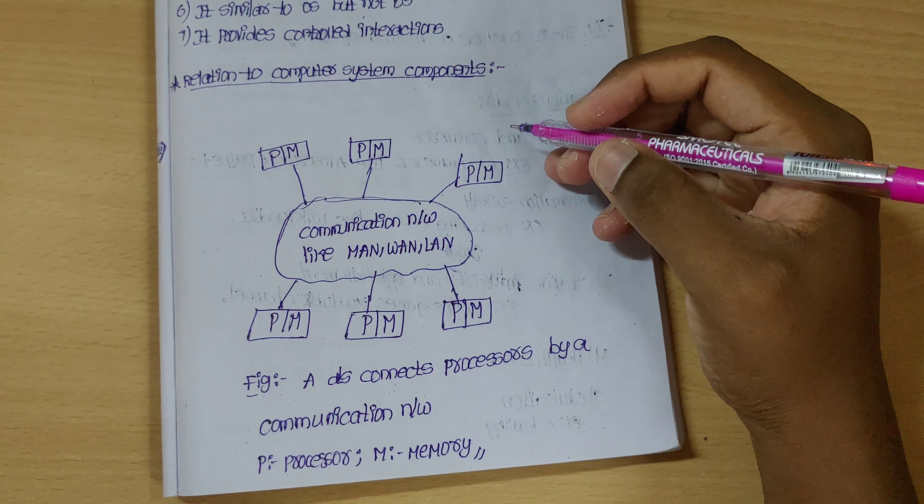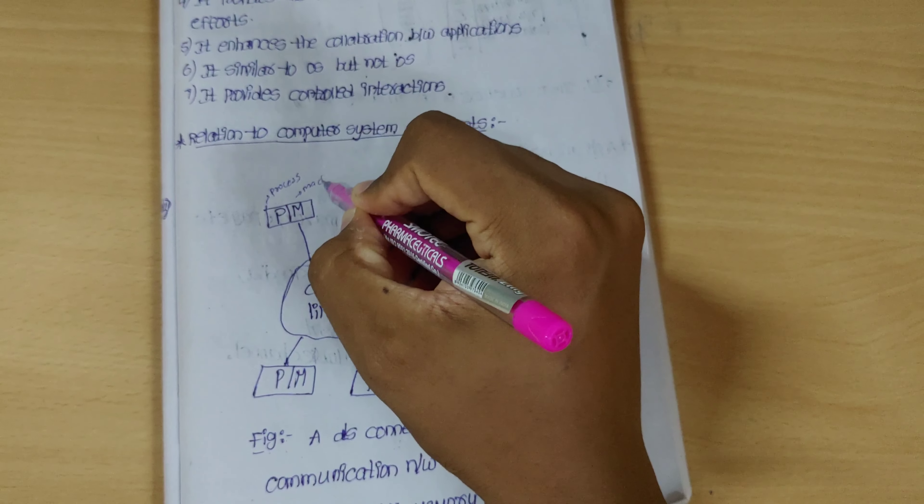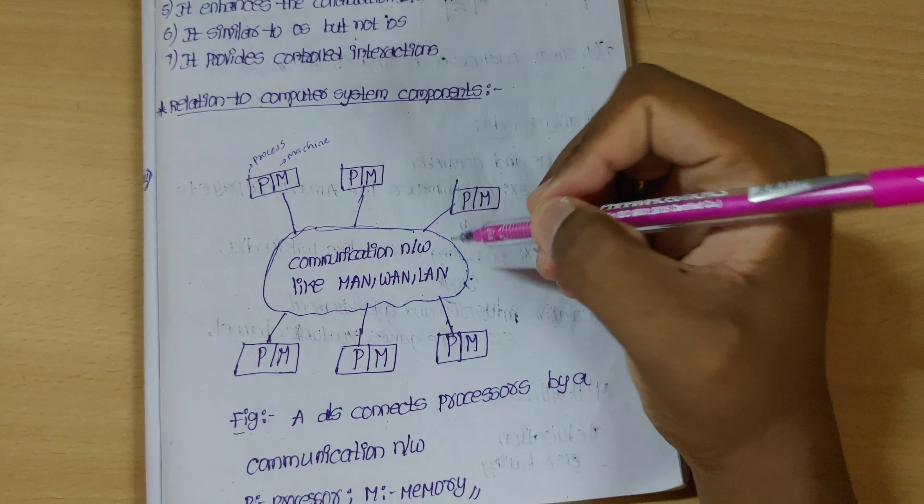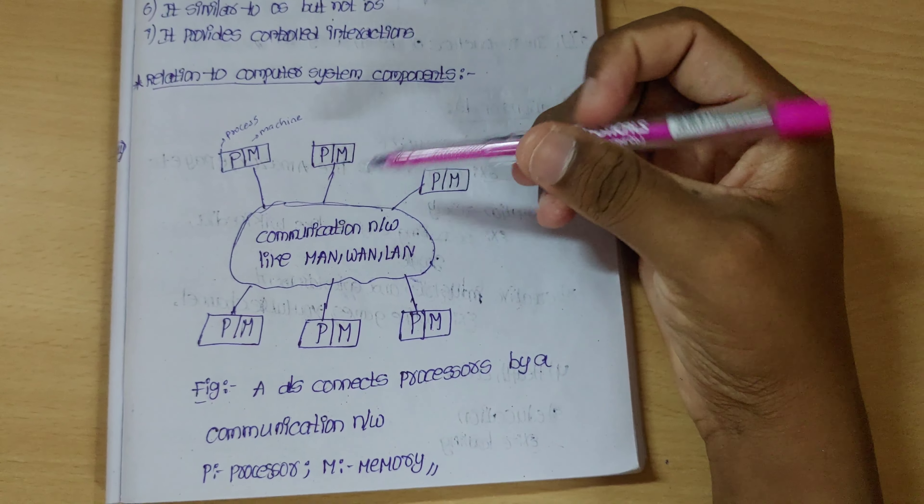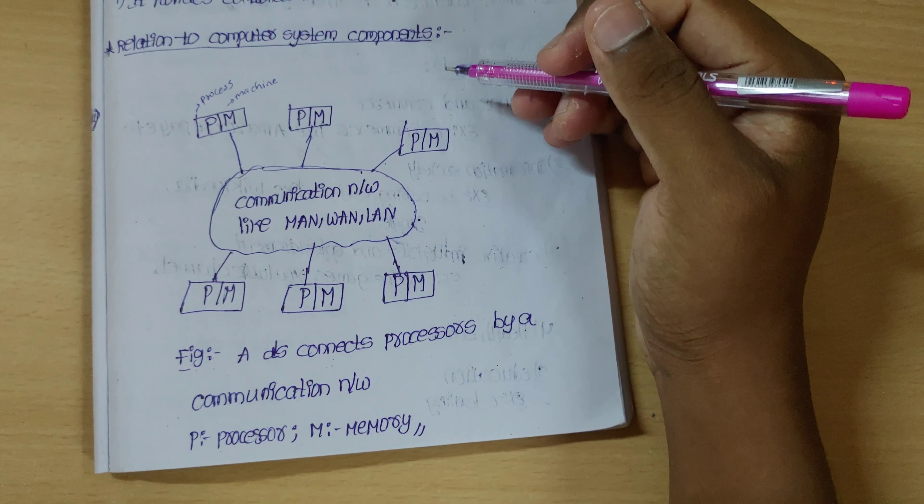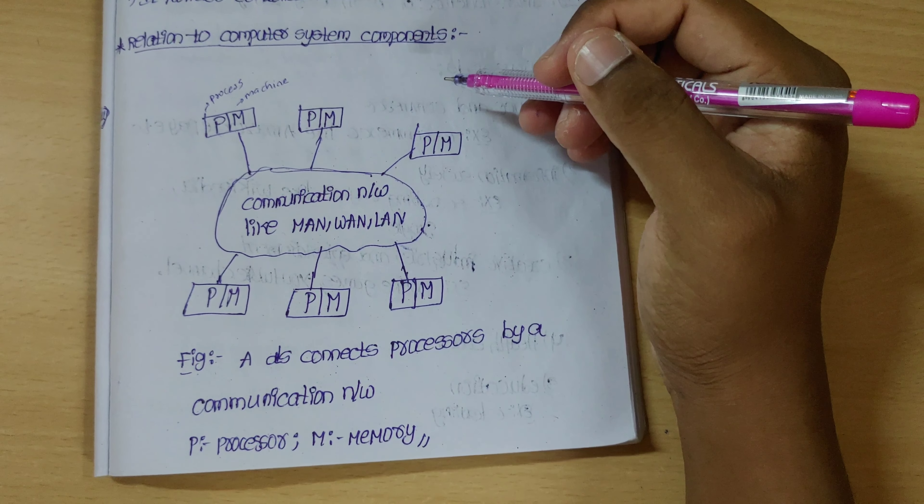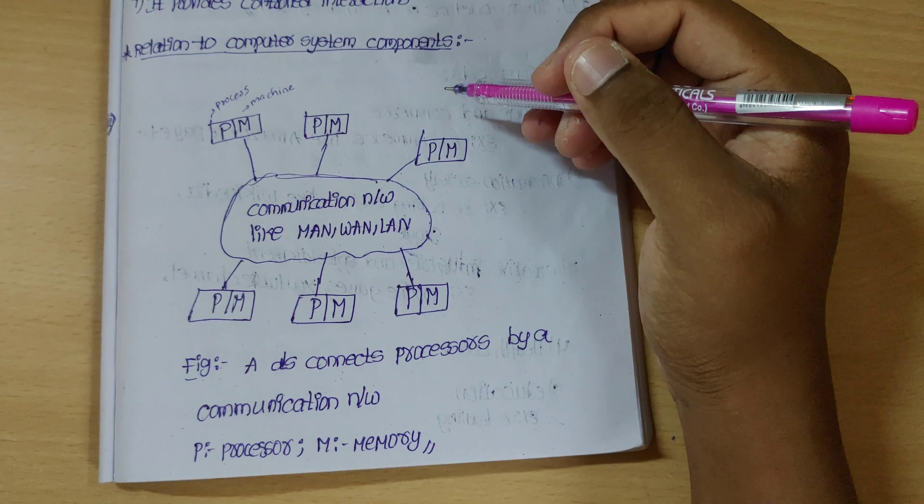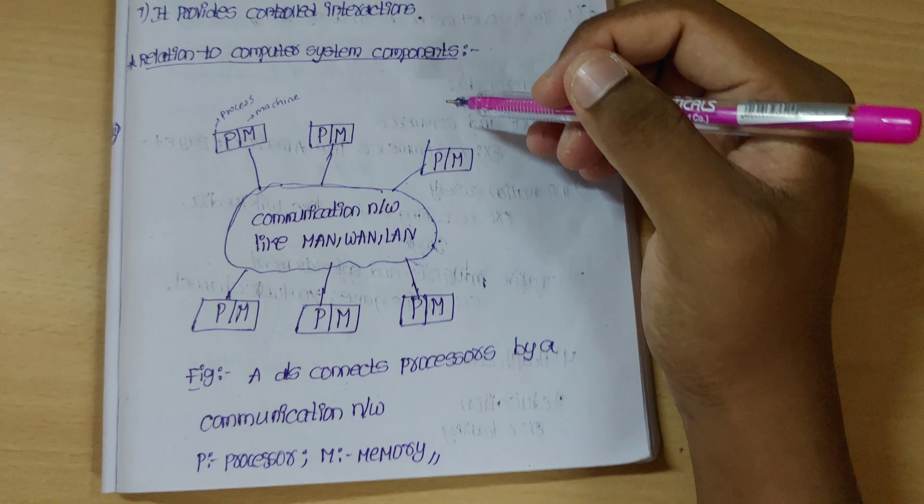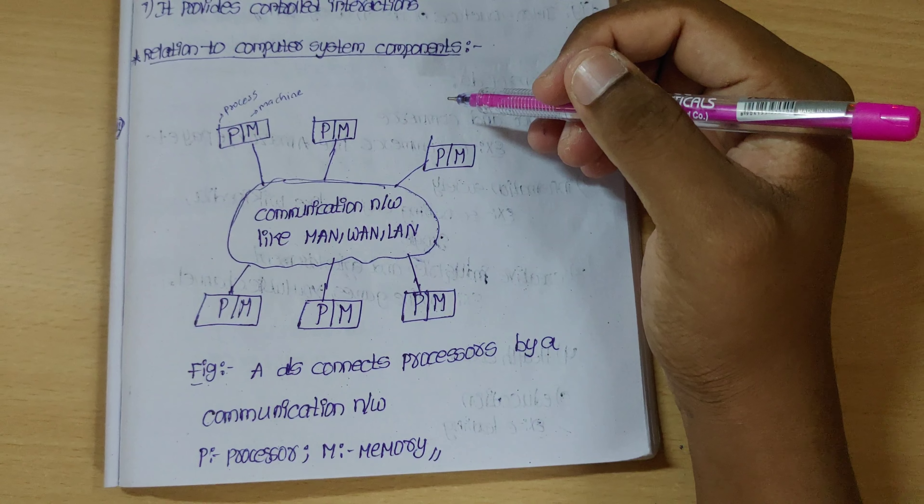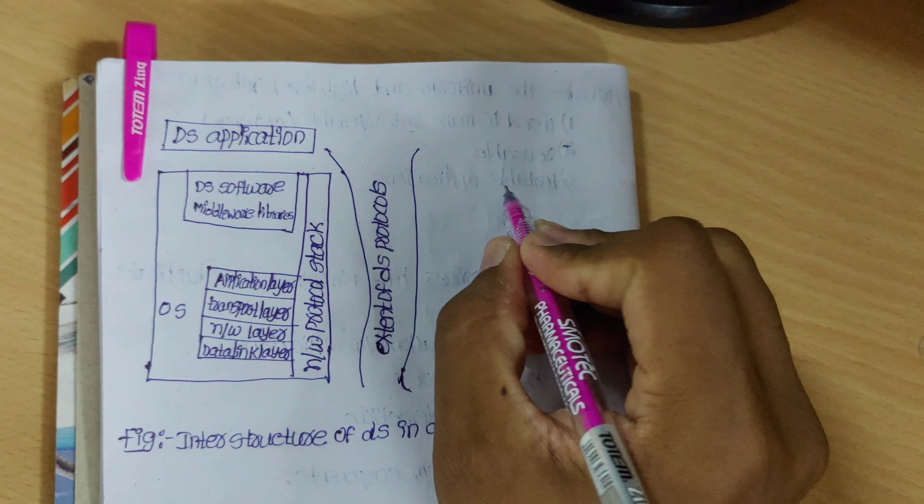So it has five characteristics. It is related to computer system components. The first thing we have in this architecture is the P and process, and the memory. I think that this process is shared on a network of memory.